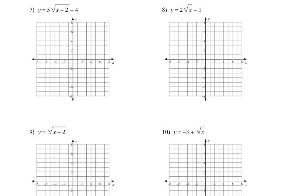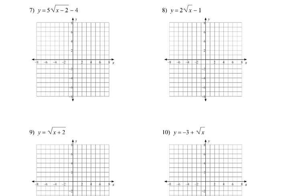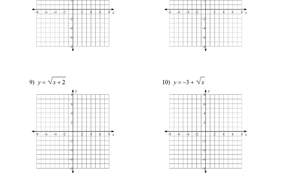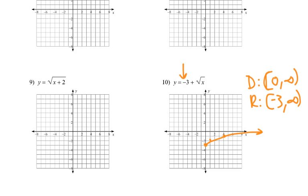That's all you needed to do for the front, but I'll do the ones on the back to show you how that changes. So let's do 10 and 9 first. Number 10 will just go down 3, so we start going down 3, and it has the same other points. Domain is still 0 to infinity. Range dropped down to negative 3 to infinity. Y-intercept will be (0,−3).